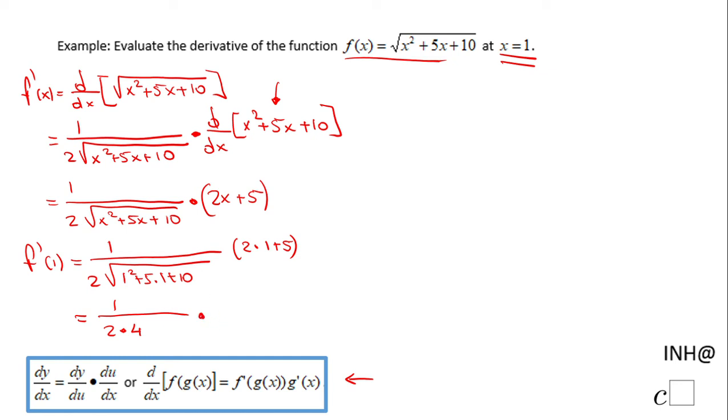Times 2 times 1 is 2 plus 5 is 7. So the final answer here, f prime of 1, will be 7 over 8. The value of the derivative of f of x at x equals 1 is 7 over 8.